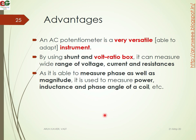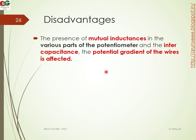The advantages of AC potentiometers: they are very versatile instruments. Using a shunt and voltage ratio box, they can measure a wide range of voltages, currents, and resistances. They are also able to measure both phase angle and magnitude, including power, inductance, and phase angle. The disadvantage is the presence of mutual inductance in various parts of the potentiometer and the inner capacitance, which affects the potential gradient of the wires.